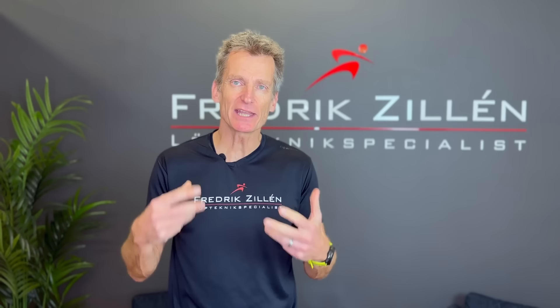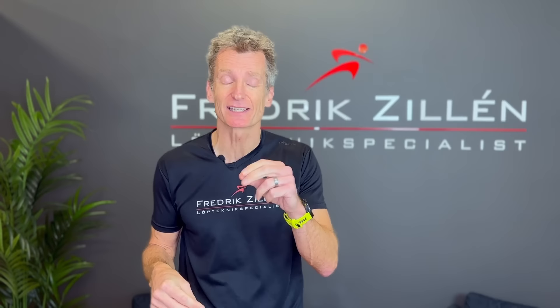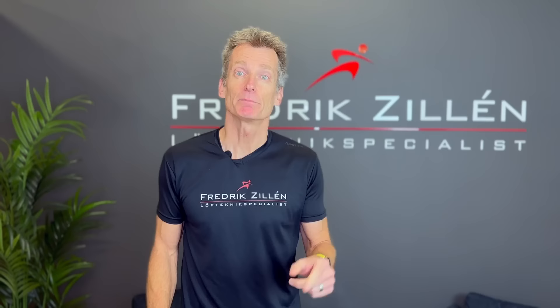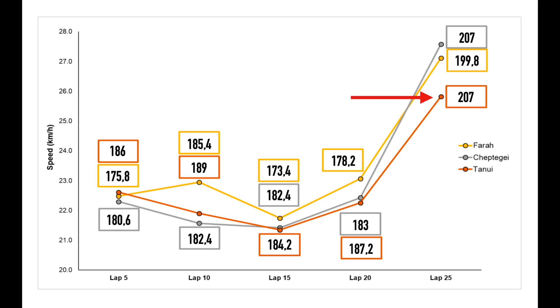The same is true for the runner-up, Cheptigay, who holds the world record for both 5,000 and 10,000 meters — at least when I'm recording this. For him too, the difference is 27 steps per minute. For Tannoui, the bronze medalist, the difference is smaller, although he is also well above 200 strides per minute in the final lap.